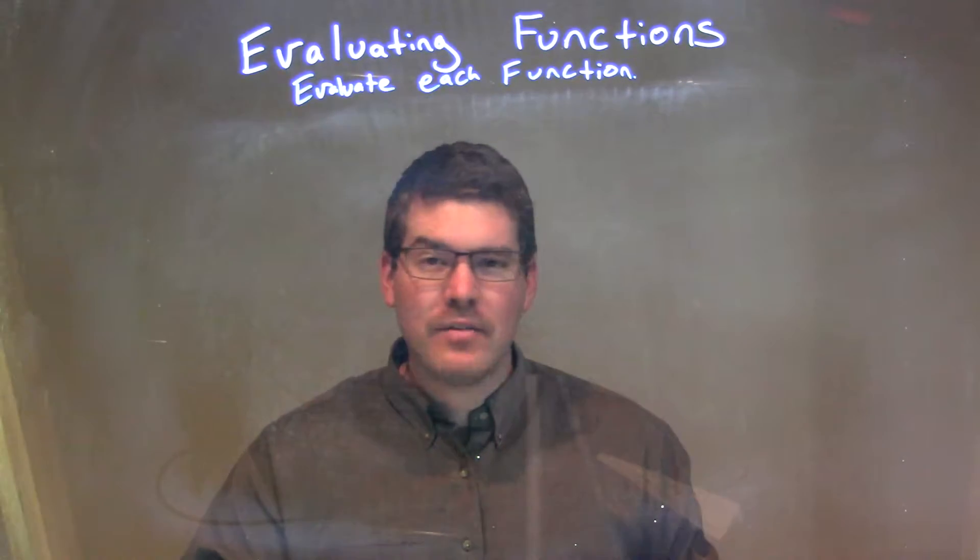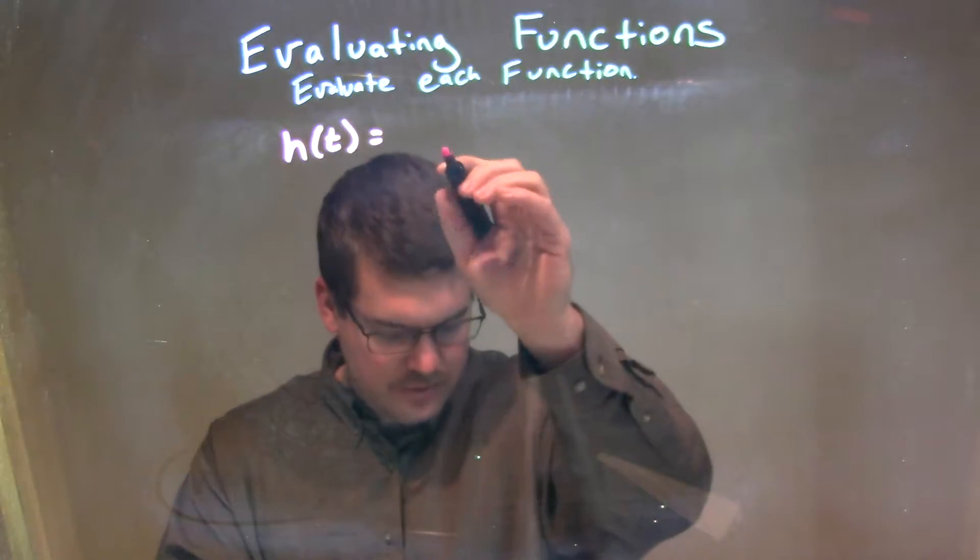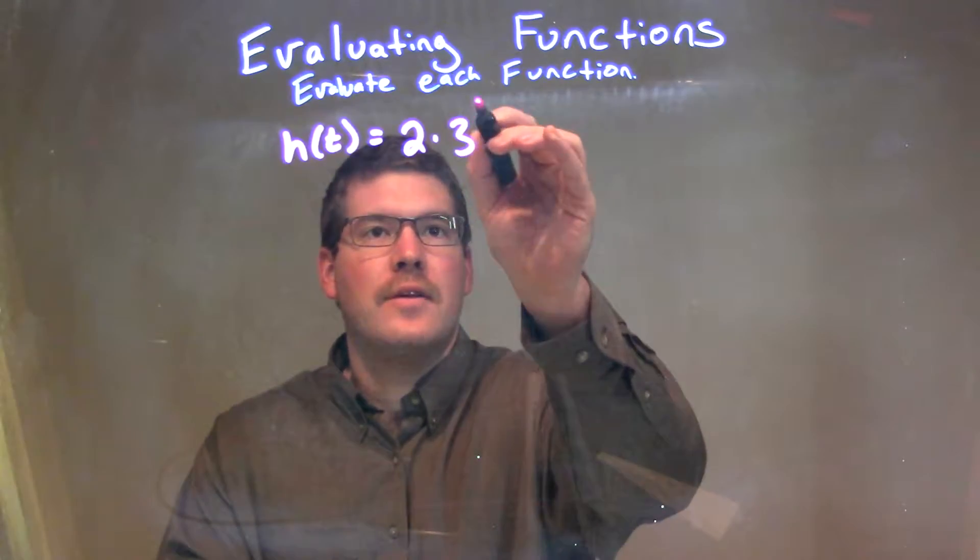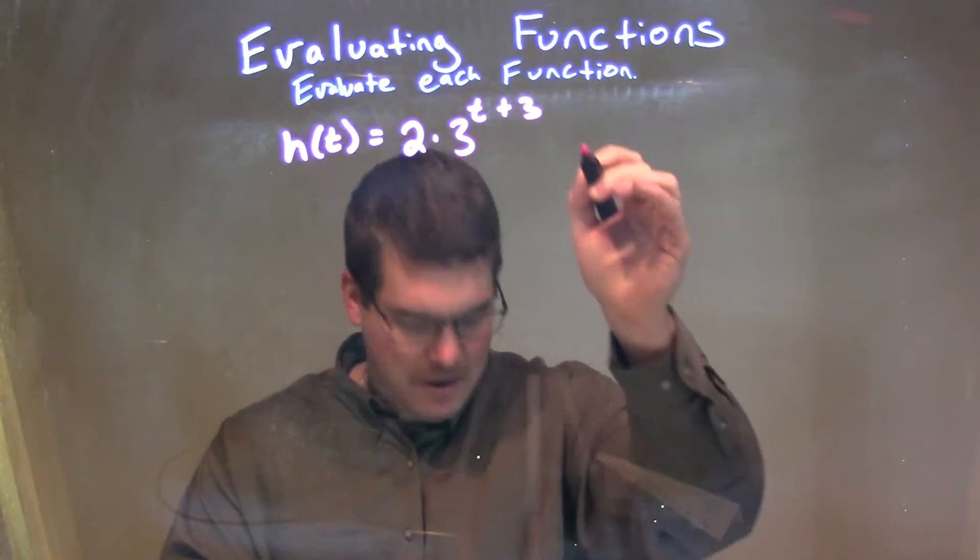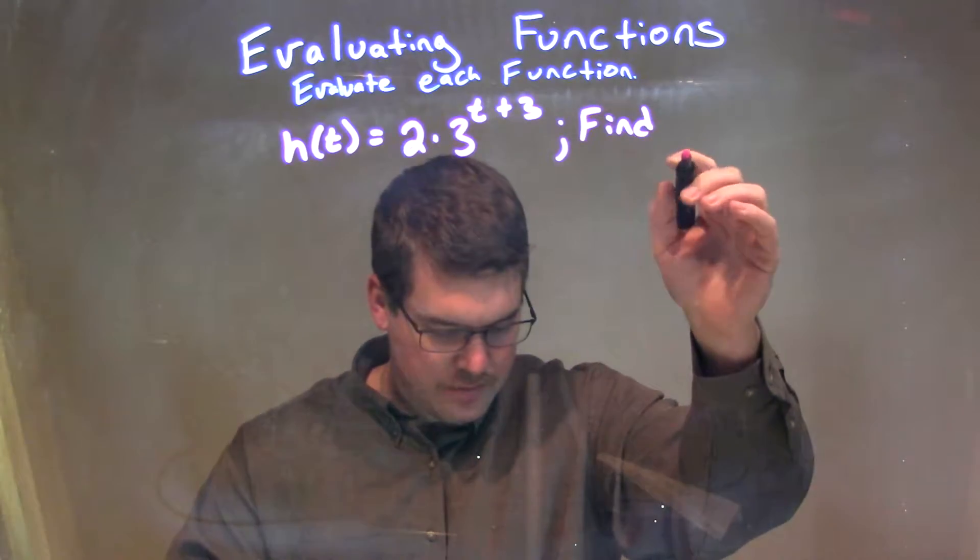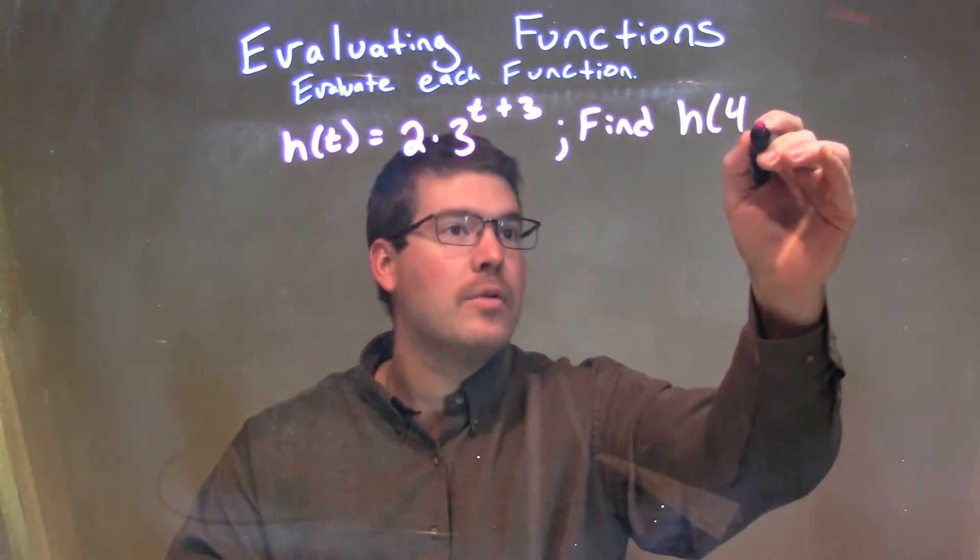So, if I was given this function, h(t) is equal to 2 times 3 to the t plus 3 power, and we want to find h(4 + t).